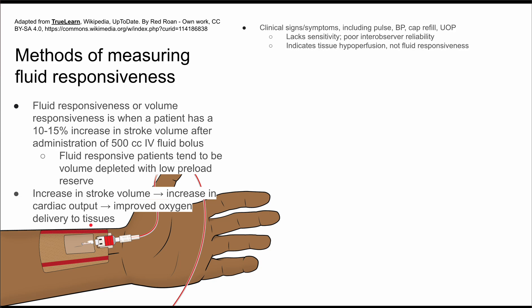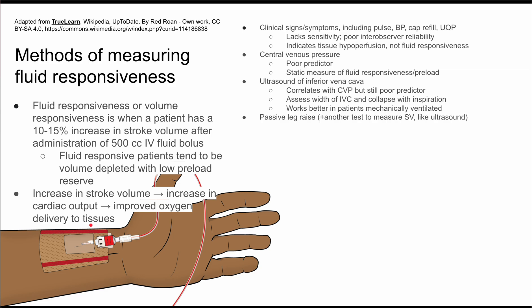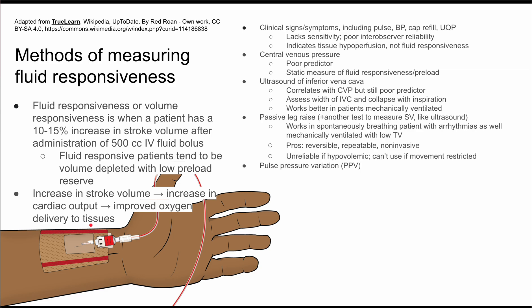There are a number of ways to measure fluid responsiveness — some are better than others, some are easier than others. The first and perhaps simplest is clinical signs and symptoms, including the patient's pulse, blood pressure, capillary refill, and urine output. These tests lack sensitivity and have poor inter-observer reliability, so one physician might get a different result than another. They indicate tissue hypoperfusion, not necessarily fluid responsiveness.